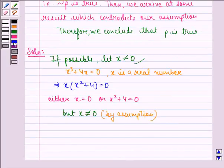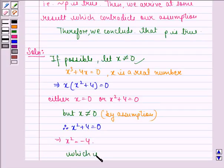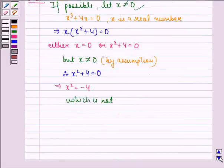we say that x² + 4 = 0 which implies that x² = -4, which is not possible as x is a real number.